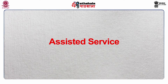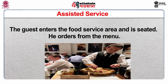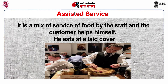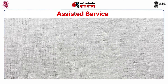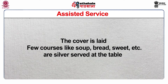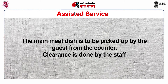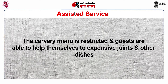Another type of service is assisted service. The guest enters the food service area and is seated, orders from the menu. It is a mix of service of food by the staff and the customer helping himself, and he eats at a laid cover. Types of assisted service include, number one, carvery. There are counters where food may be carved on the spot. The cover is laid. Few courses like soup, bread, sweet, etc., are silver served at the table. The main meat dish is to be picked up by the guest from the counter, and clearance is done by the staff.